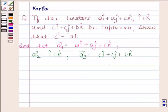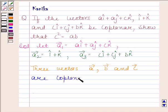We know that three vectors, vector a, vector b, and vector c are coplanar if and only if vector a dot vector b cross vector c is equal to zero.